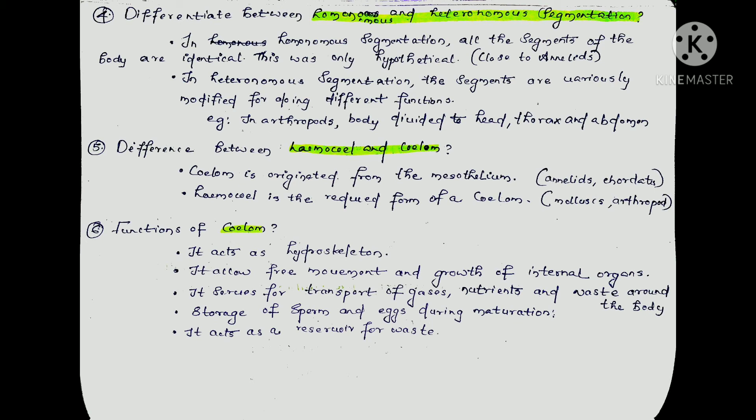Next is heteronomous segmentation. In heteronomous segmentation, unlike homonomous, the different segments have different structures and perform different functions. The best example is Arthropods — in heteronomous segmentation, the segments are variously modified for different functions. For example, in Arthropods, the body is divided into head, thorax, and abdomen.